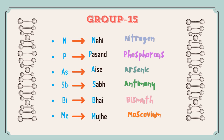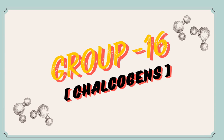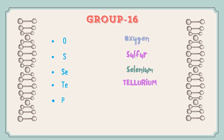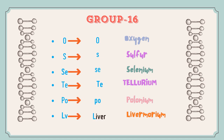Let's move on to the next group, that is Group 16, also known as Chalcogens. The elements are Oxygen, Sulphur, Selenium, Tellurium, Polonium, and Livermorium. The trick here is very similar to the chemical symbols: 'O S Se Te Po Liver' — right? Very simple.